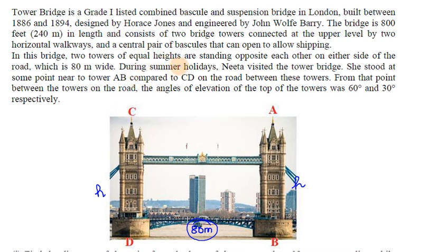During summer holidays, Nita visited the tower bridge. She stood at some point near tower AB compared to CD. The angle of elevation is 60 degrees and 30 degrees respectively.